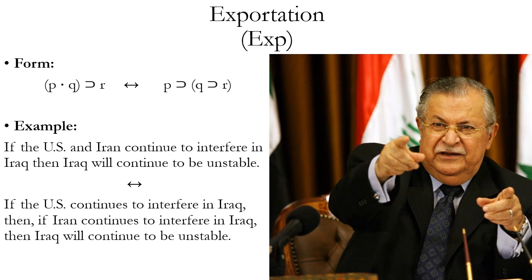Here's a natural language example. If the U.S. and Iran will continue to interfere in Iraq, then Iraq will continue to be unstable. That is logically equivalent to: if the U.S. continues to interfere in Iraq, then if Iran continues to interfere in Iraq, then Iraq will continue to be unstable. This is a rule to keep on the lookout for — if you see a conditional that has a conjunction as its antecedent, or a conditional that has another conditional as its consequent, you should think about using exportation.